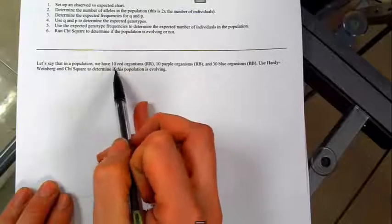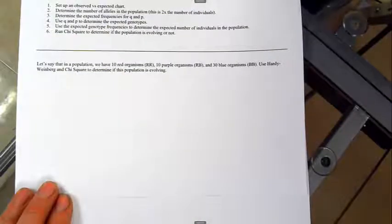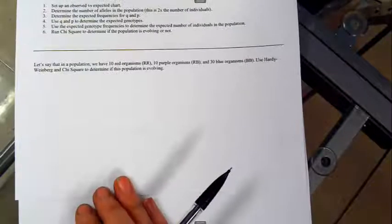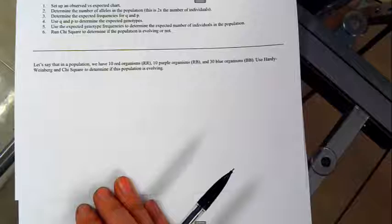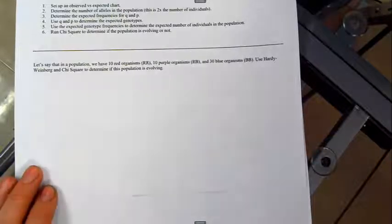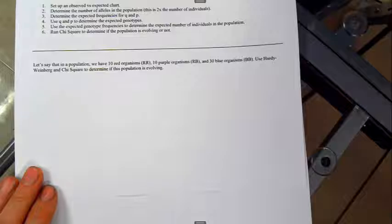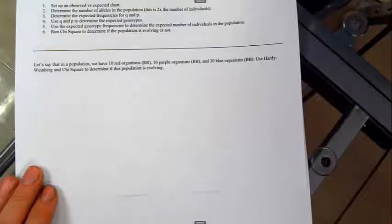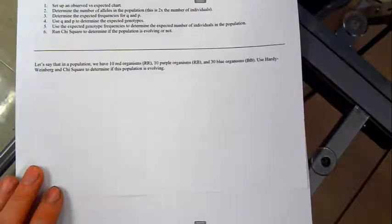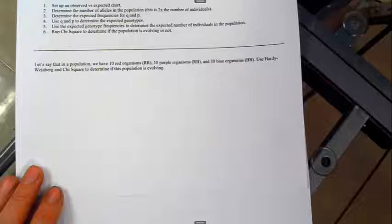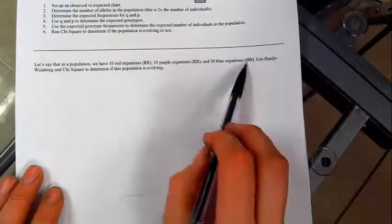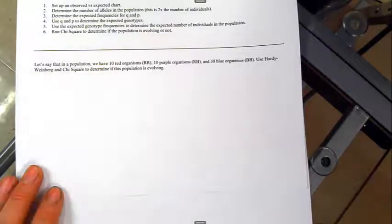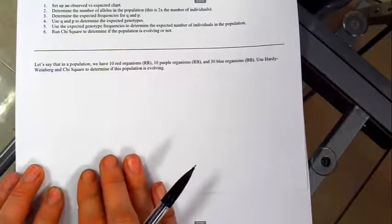Here's our problem. So I found this problem online. It's a really great blog that kind of walks you through this process. I will put a link in the description of this video if you prefer to read and want to follow through. But if you're more of a visual learner and audio learner and want to work with me, let's do this. So we've got 10 red organisms, 10 purple organisms, and 30 blue. And this is an incompletely dominant trait. We're going to use Hardy-Weinberg and chi-square to determine if the population is evolving or not.